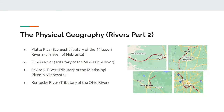Some smaller but nonetheless important rivers in the Midwest include the Platte River, the largest tributary of the Missouri River; the Illinois and St. Croix Rivers, which are two tributaries of the Mississippi River; and the Kentucky River, which is a tributary of the Ohio River.